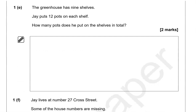The greenhouse has 9 shelves. Jay puts 12 pots on each shelf. How many pots does he put on the shelves in total? We're going to do 12 times 9. 9 times 2 is 18, so we put 8 down and carry 1. 9 times 1 is 9, plus the carried 1 is 10. So 108 is the answer.